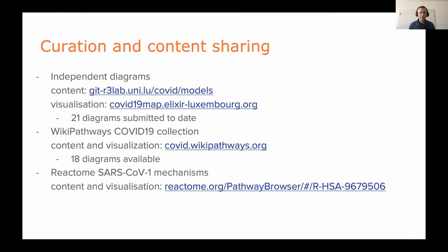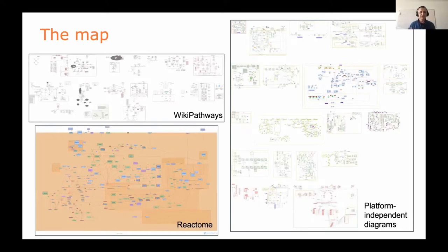Currently we have 21 diagrams submitted for the COVID-19 disease map. On WikiPathways there are 18 diagrams available, and on Reactome there is a large diagram published specific for SARS-CoV-1 mechanisms, extensible toward SARS-CoV-2. As a patchwork, they look disjoint but are interconnected and interoperable thanks to our integration efforts — you can search across them and put them together into a bigger network.